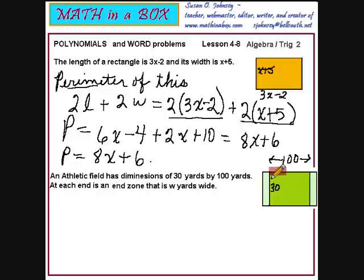Now, the width for the larger rectangle is 30 yards, but that is also the width or the length, as you would like to call it, for the smaller rectangle. Notice, at each end is an end zone that is W yards wide. So for the small rectangles, we know that we have a width here of W. And if you want to, you can also write the 30 down here.